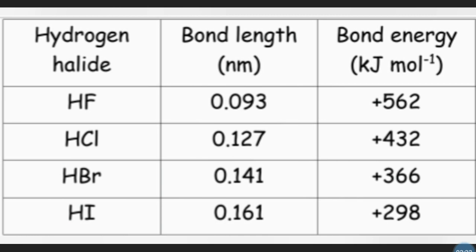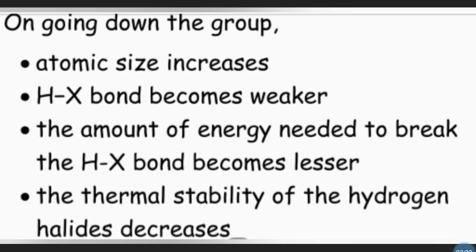The decomposition of hydrogen halide involves the breaking of the covalent bond between the hydrogen atom and the halogen atom. Therefore, we shall study the bond energy of the hydrogen halide to explain the trend of thermal stability. The longer the bond length, the weaker the bond, and hence the lower the bond energy.